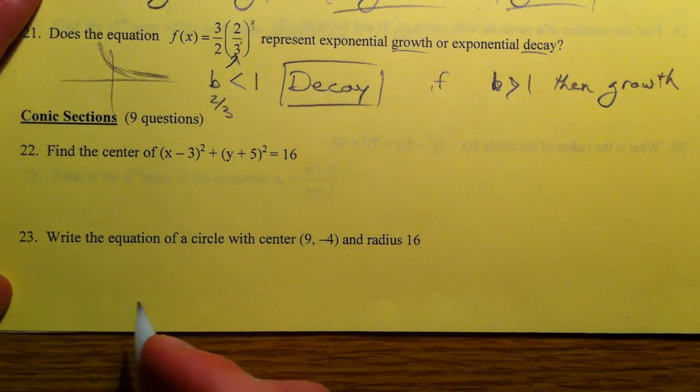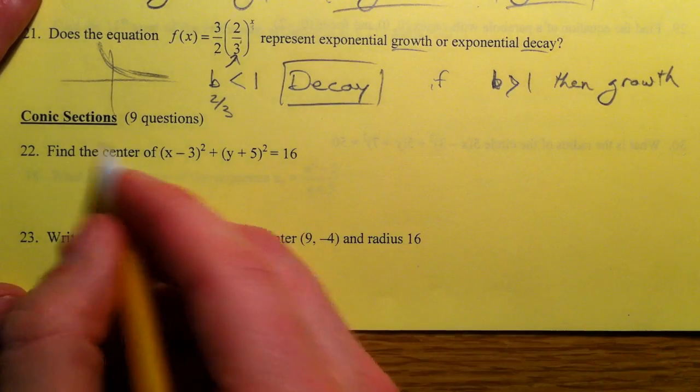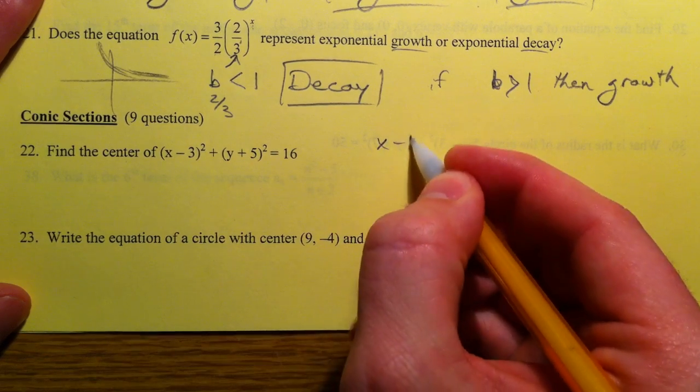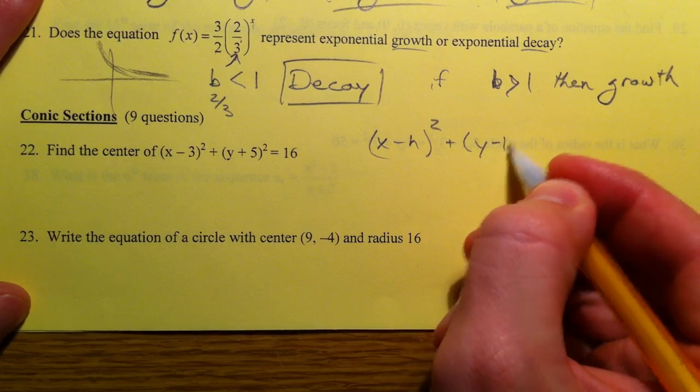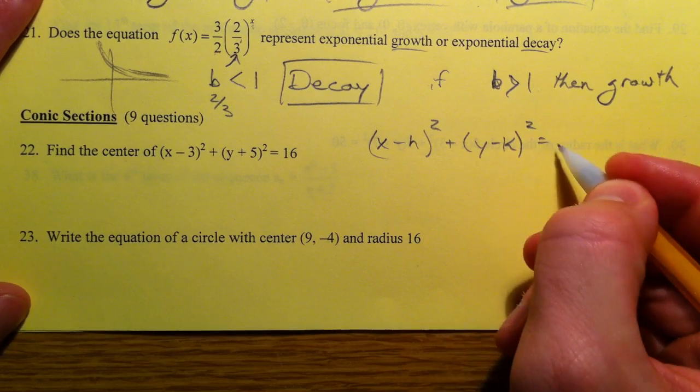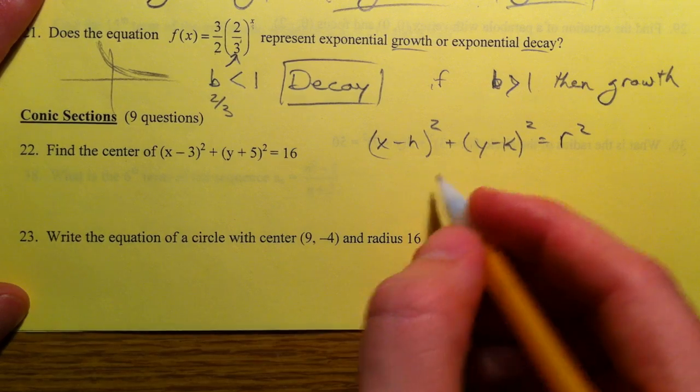Alright, let's talk some conic sections. First up, circles. We talked about how circles were x minus h, y minus k equals r squared. Really just Pythagorean Theorem.